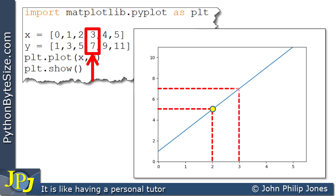If I continue and look at another coordinate position — (3, 7) — looking at the graph we can see the dotted lines showing us the 3 and the 7, and the yellow dot appearing at that coordinate position. All these points appear on this straight line graph.